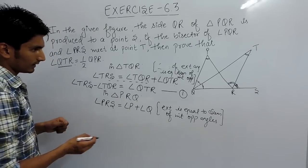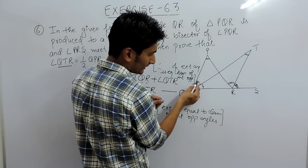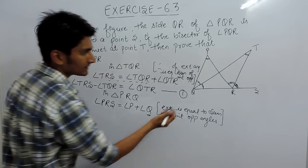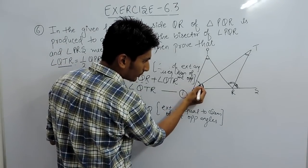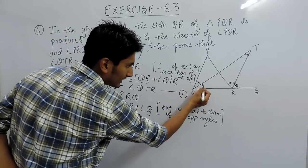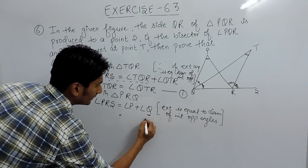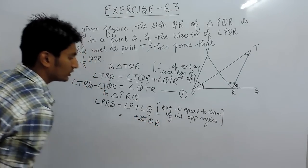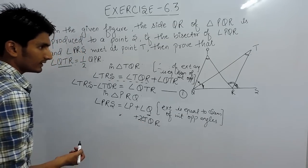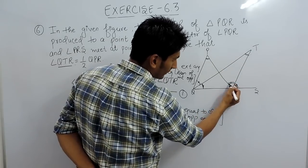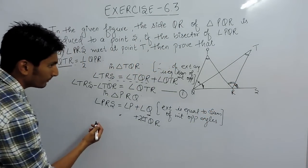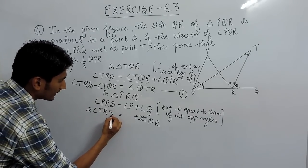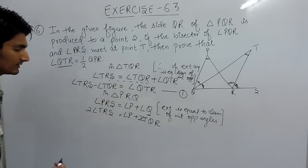Now, since QT is an angle bisector, angle TQR equals half of angle Q, meaning angle Q can be written as twice of angle TQR. Similarly, since RS bisects angle QRS, the exterior angle PRS can be replaced by twice of angle TRS. So substituting, angle P plus twice of angle TQR equals twice of angle TRS.